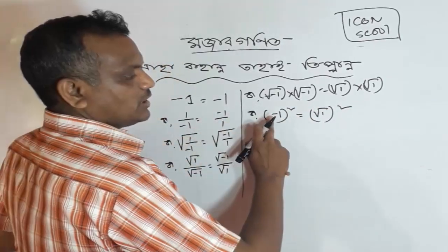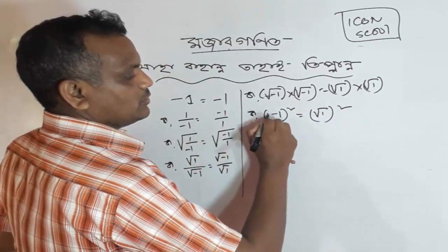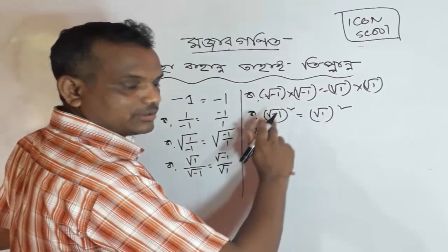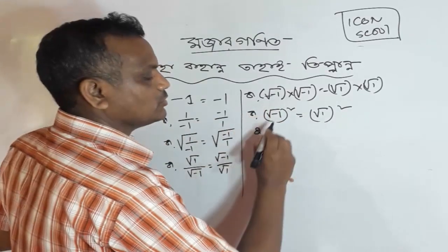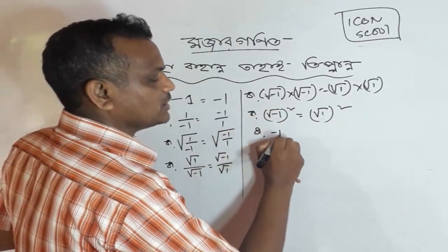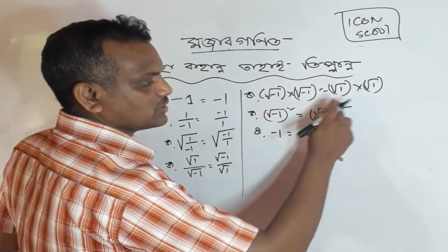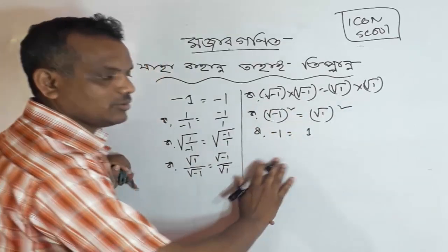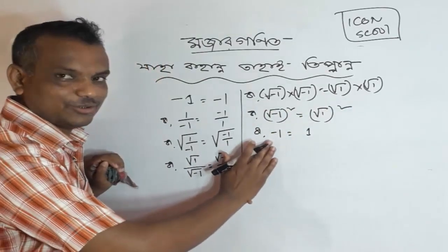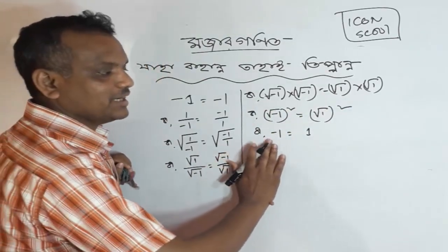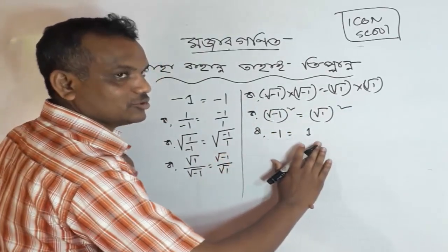Square is root of 1. Square root of 1 is 0, minus 1 is 0, and 1 is 0. We can cut into 2 times.